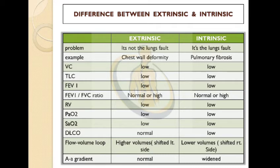Flow volume loop: higher volume shifted to the left side in extrinsic and lower volume shifted to the right side in intrinsic. The A-a gradient is normal in extrinsic and widened in intrinsic.